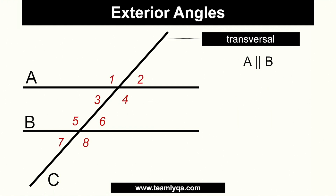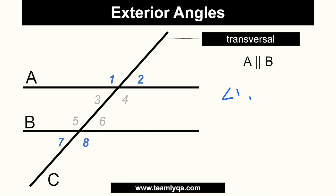If those are the interior angles, what are the exterior angles? The prefix 'ex' can mean outside. So exterior angles are on the outside of the two parallel lines — the opposite of interior. The exterior angles are angles 1, 2, 7, and 8, because they are outside the two parallel lines.